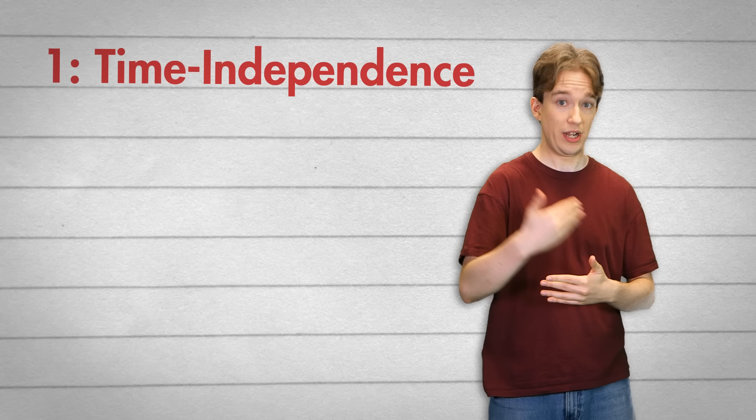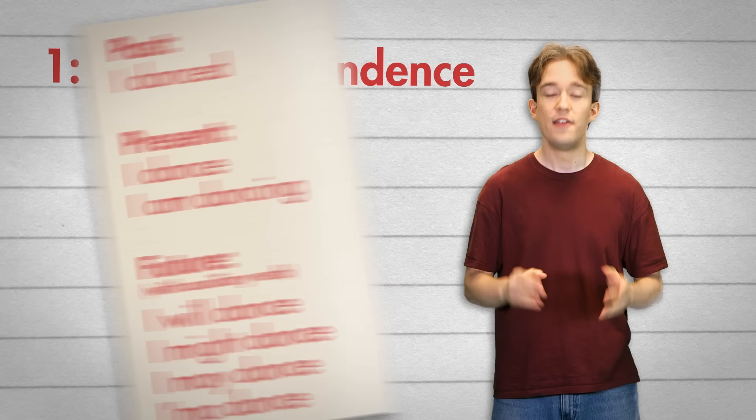Number one: time independence. If you want to describe an activity in English, you have to say when it happened or when it will happen. You have to. That's how verbs conjugate. There is no way in English to describe the concept of a person and dancing, but not to mention anything about time.